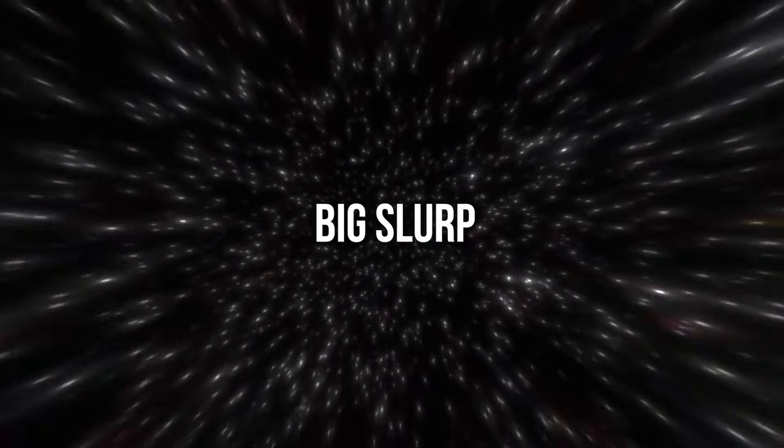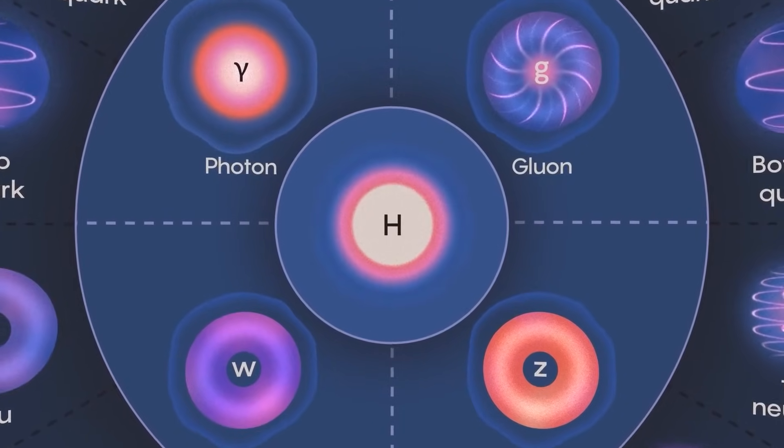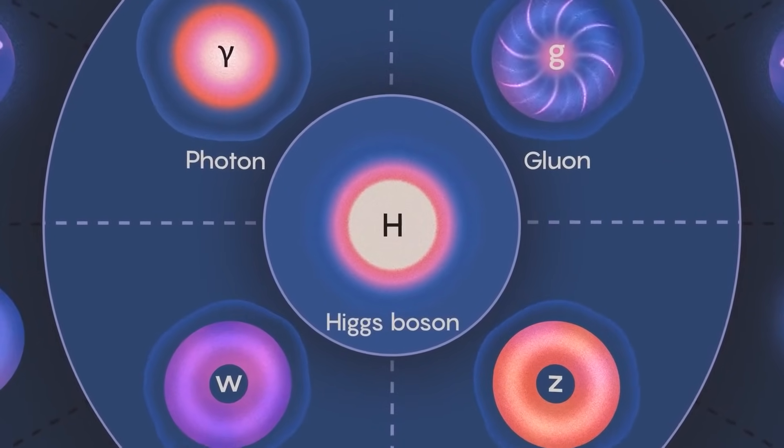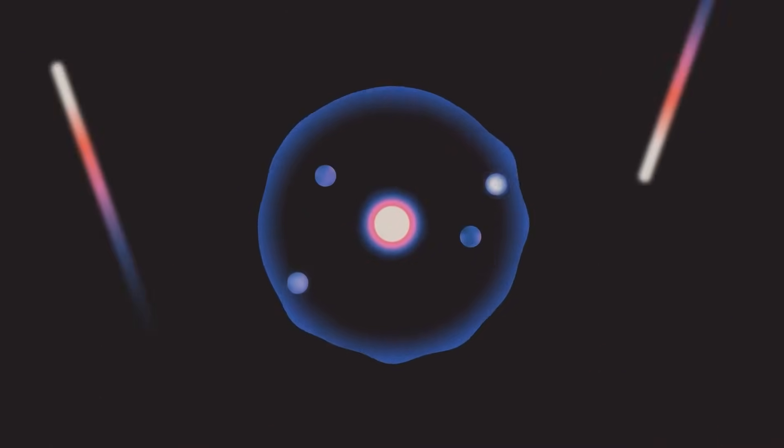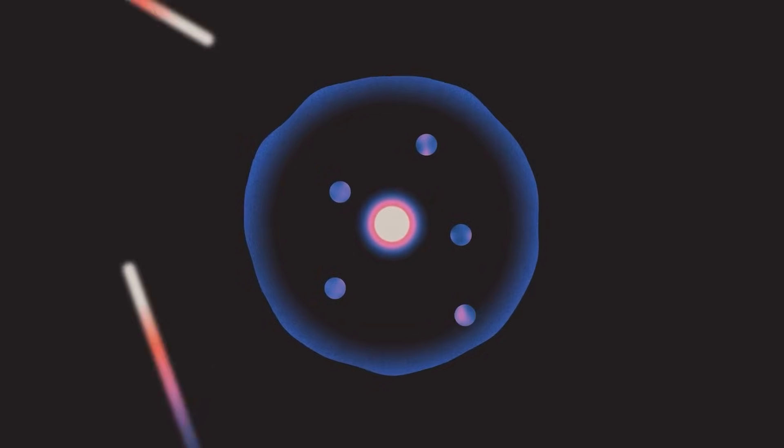Lastly, there is the theory known as the Big Slurp, which emerged recently after revelations about the Higgs boson's true nature. This particle plays a crucial role in granting mass to elementary particles. In this model, if the Higgs boson particle possesses a particular mass, it could suggest that the vacuum of our universe might be inherently unstable, possibly existing in a perpetually metastable state, a notion that has been debated extensively.